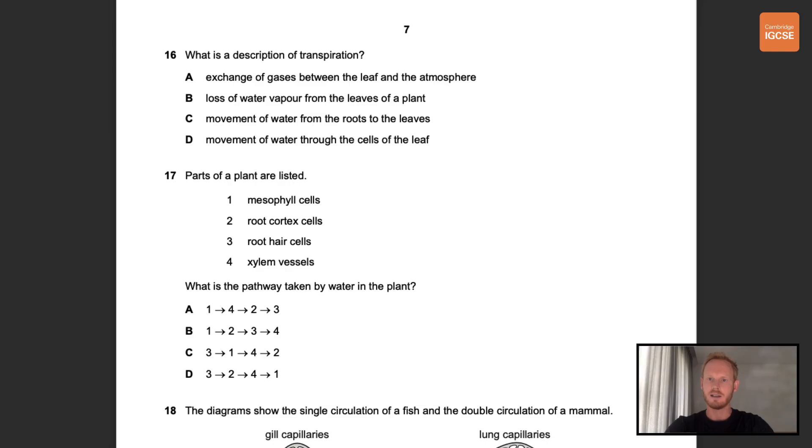Number 16. What is a description of transpiration? So transpiration can simply be described as a loss of water vapor from leaves. Water evaporates from the surfaces of the mesophyll cells into the air spaces and then diffuses out of the leaves through stomata as water vapor.